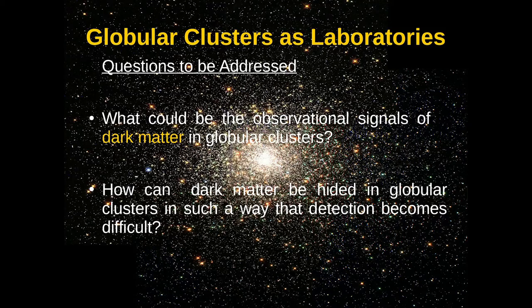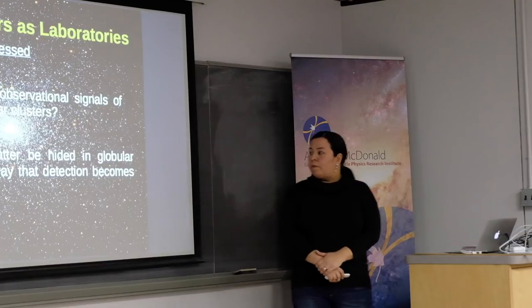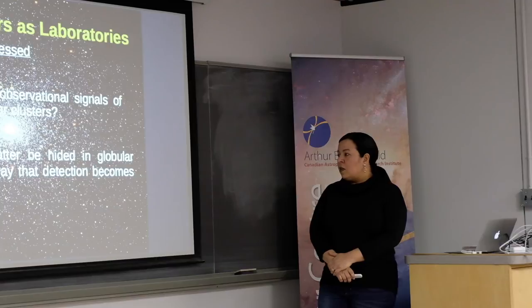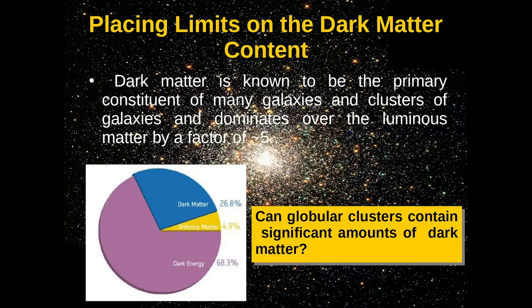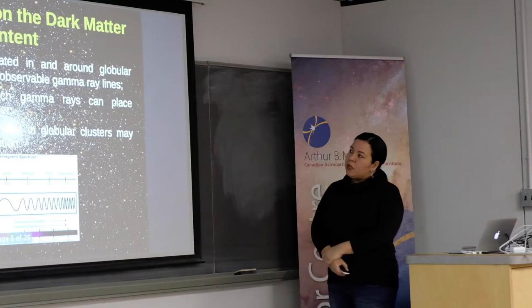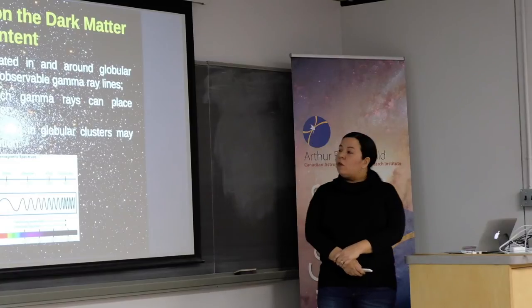In our paper we address two important questions. First, what could be the observational signals of dark matter in globular clusters? We consider globular clusters that might hold an intermediate mass black hole, and we model the dark matter particle in a specific way. How can dark matter be hiding in these globular clusters such that detection becomes so difficult? We know dark matter is the primary constituent of many galaxies and clusters of galaxies, and it dominates over luminous matter by a factor of five. So what could be the amount of dark matter that exists in globular clusters, and how could its signals manifest?